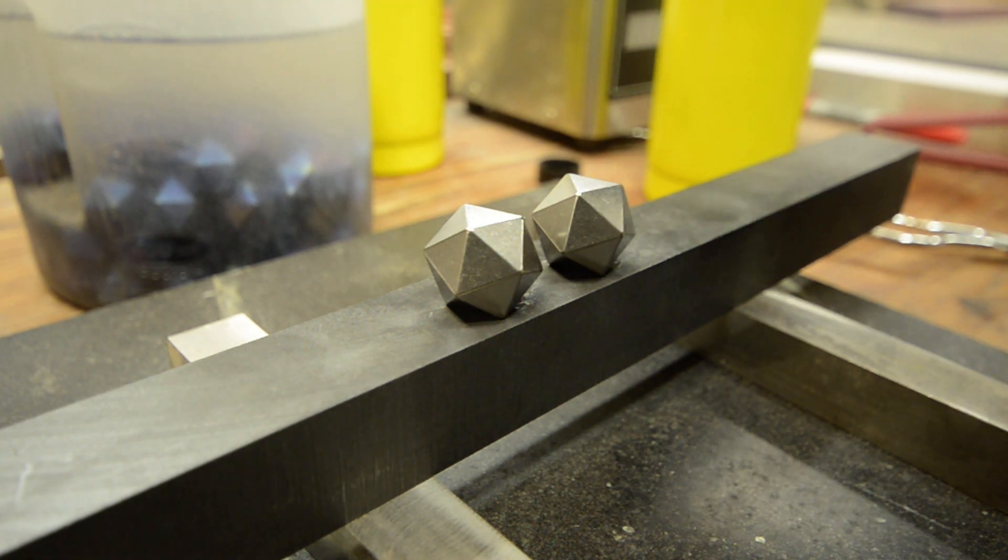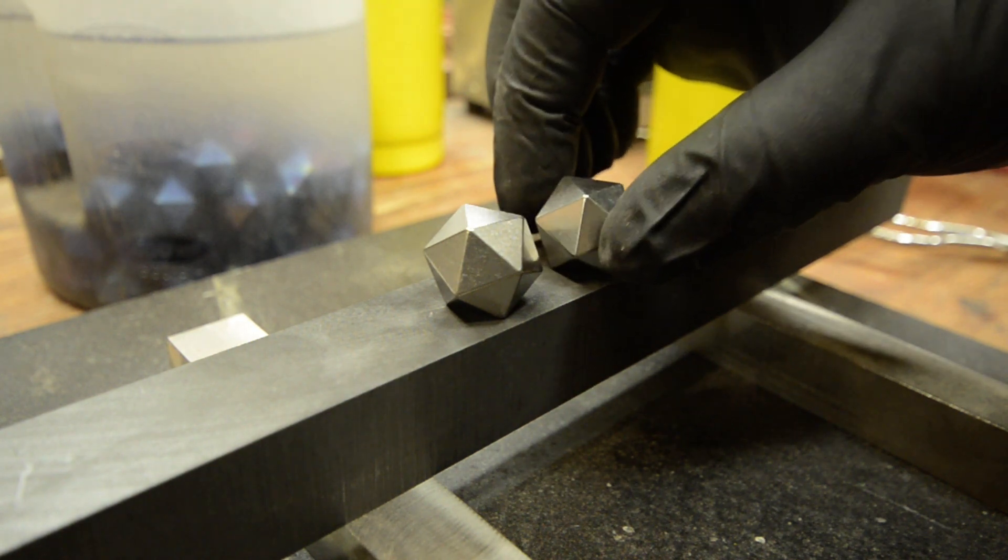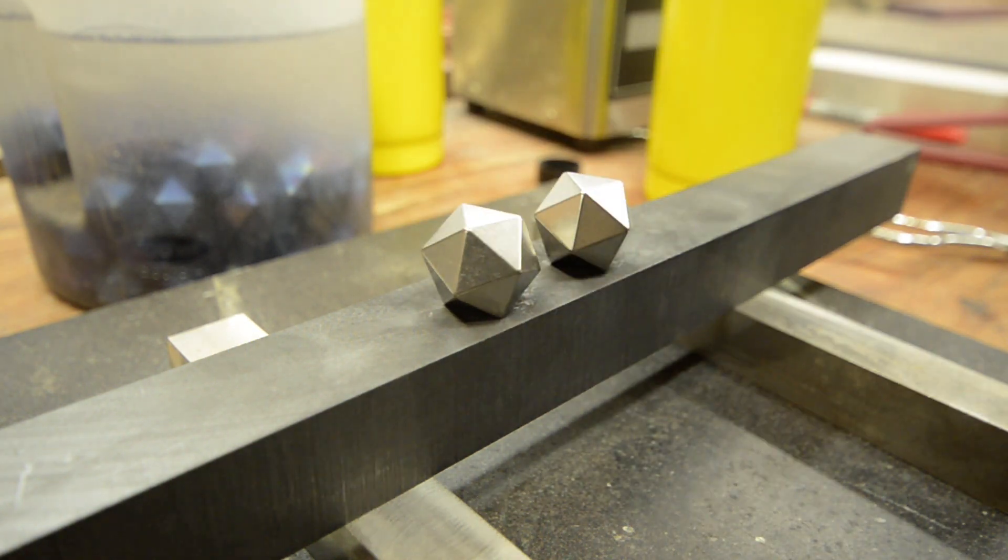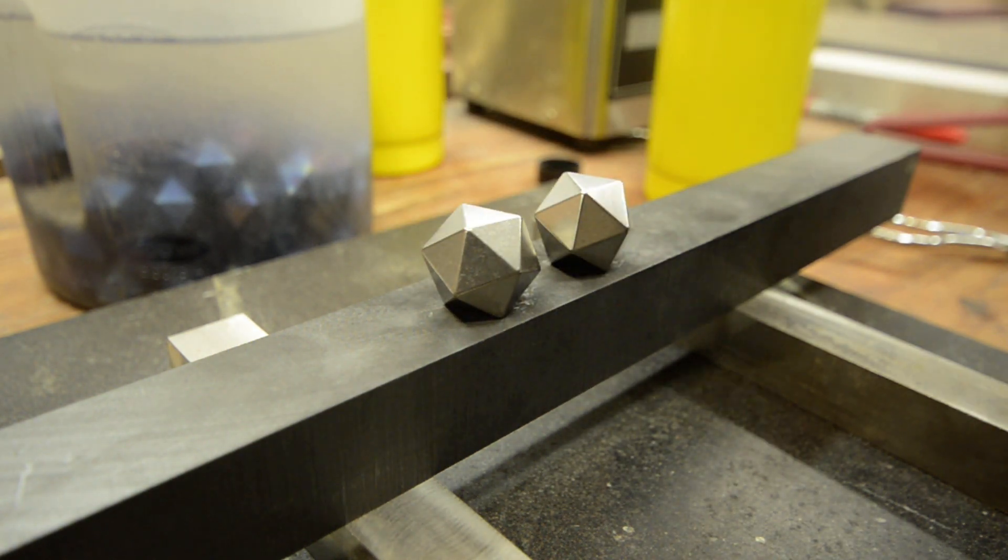So we start off with our titanium dice we've got ready to flame polish. These things are stupid amounts of clean. They have to be because any impurities on the surface will scorch the dice instead of actually growing that crystal oxide layer that we're looking for.